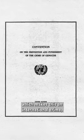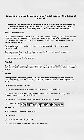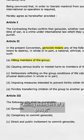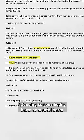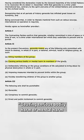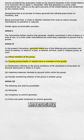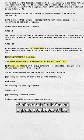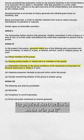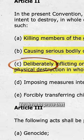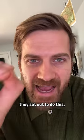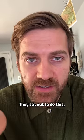The Genocide Convention makes this an international crime, defining genocide as killing members of a group, causing serious bodily harm or mental harm to members of a group, and crucially, deliberately inflicting on a group conditions of life calculated to bring about its physical destruction in whole or in part. Deliberately — you have to prove that they set out to do this, to destroy a group of people.